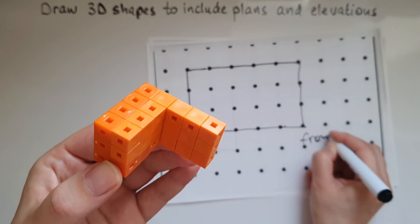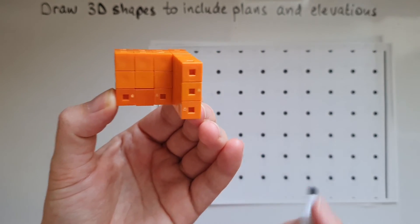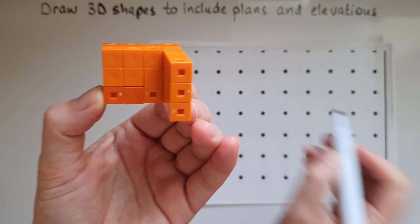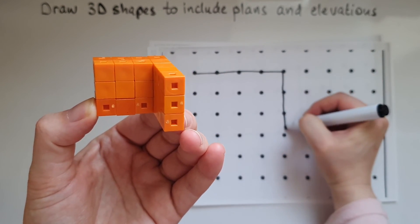And the side elevation. Four units across by three down.